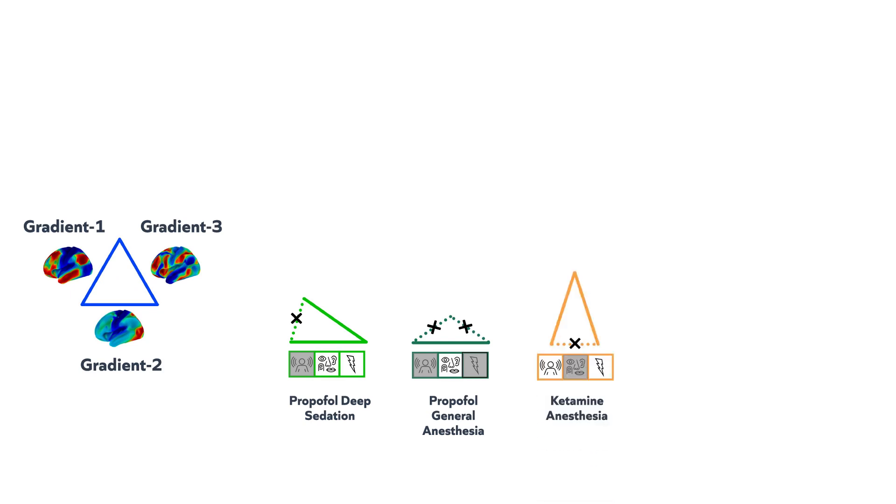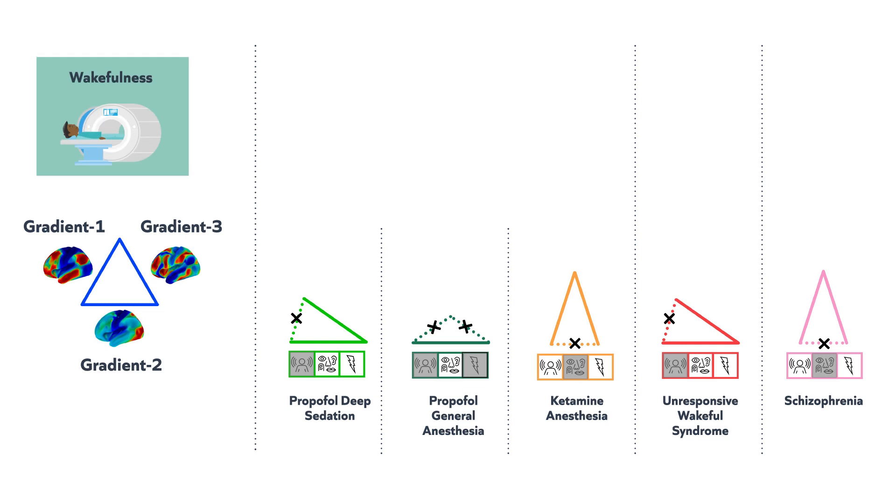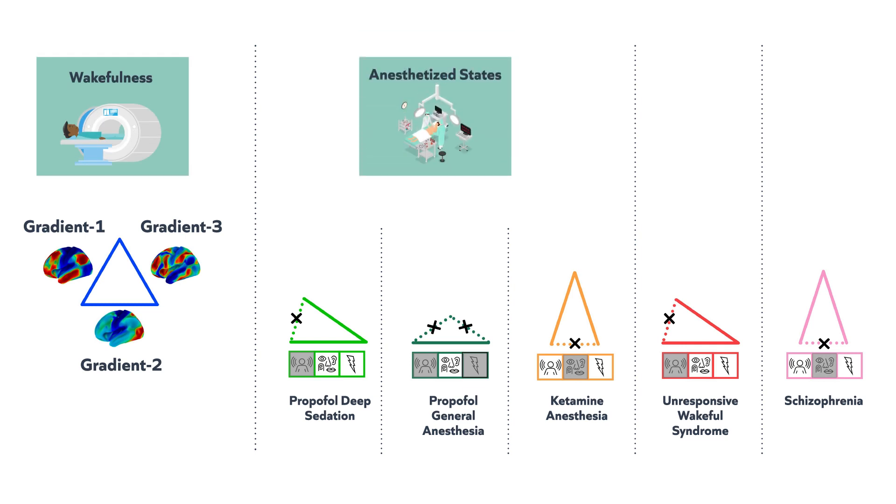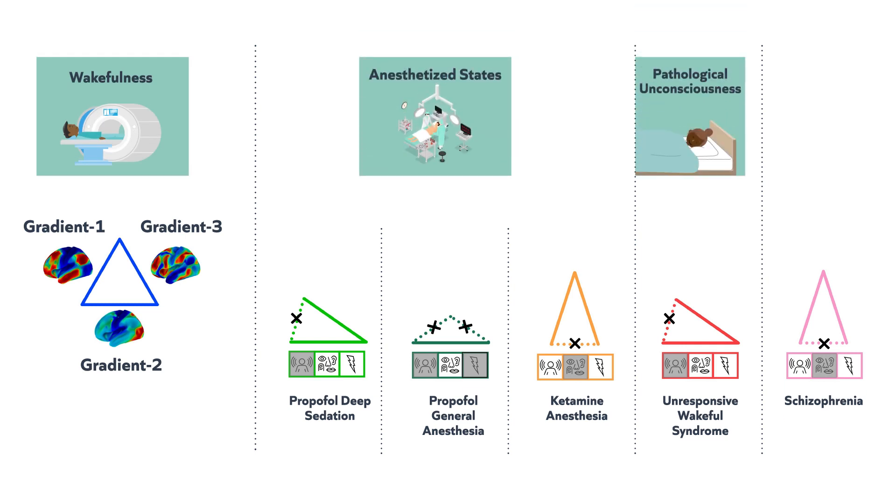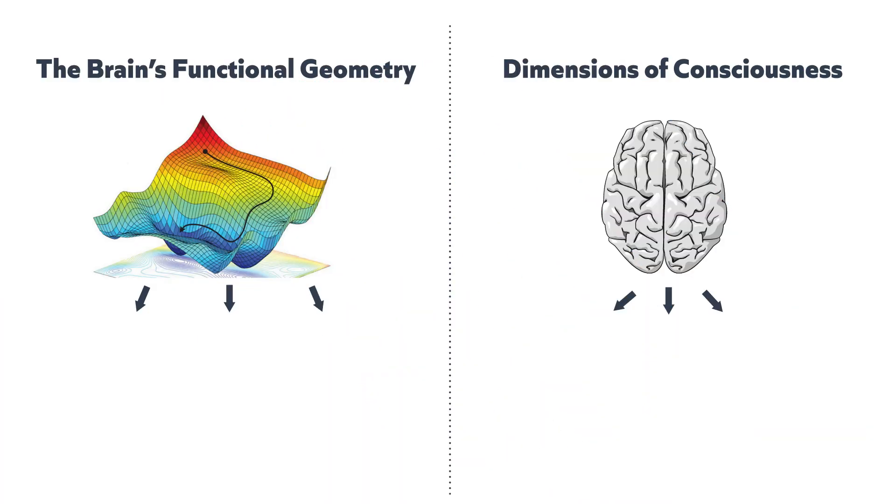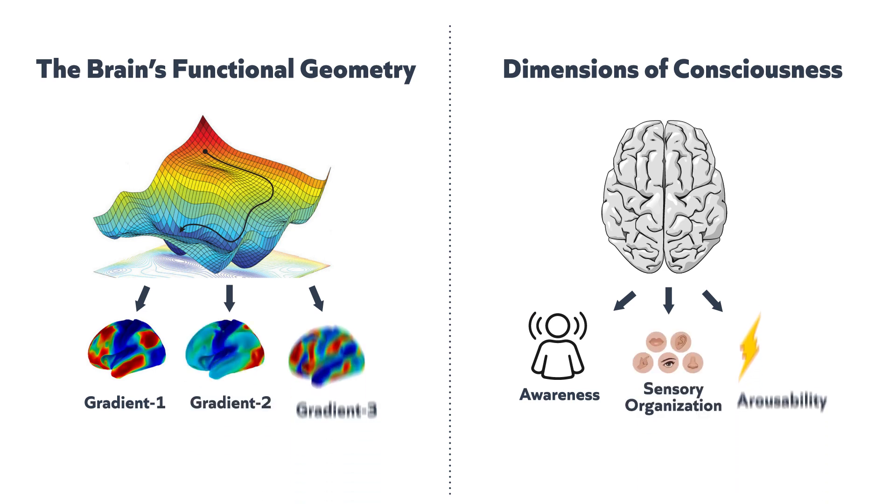In order to create a comprehensive representation of the brain's gradients associated with consciousness, the research team utilized fMRI data from study participants in various states, including wakefulness, anesthesia-induced unconsciousness, pathological unconsciousness, and individuals with psychiatric conditions such as schizophrenia. By analyzing recordings from 400 distinct brain regions, the team organized them into gradients and examined how they varied in relation to these states or diagnoses.